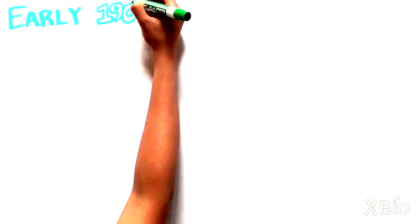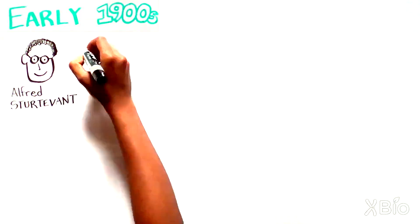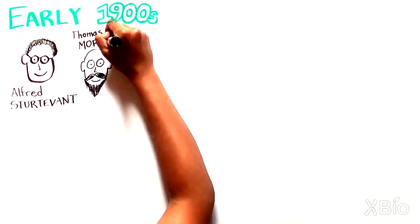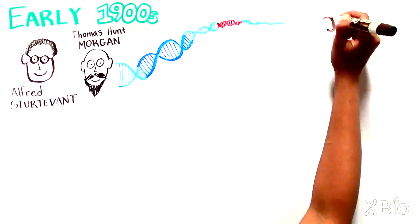Back in the early 1900s, two scientists named Alfred Sturtevant and Thomas Hunt Morgan made the first map of genes in the fruit fly Drosophila.